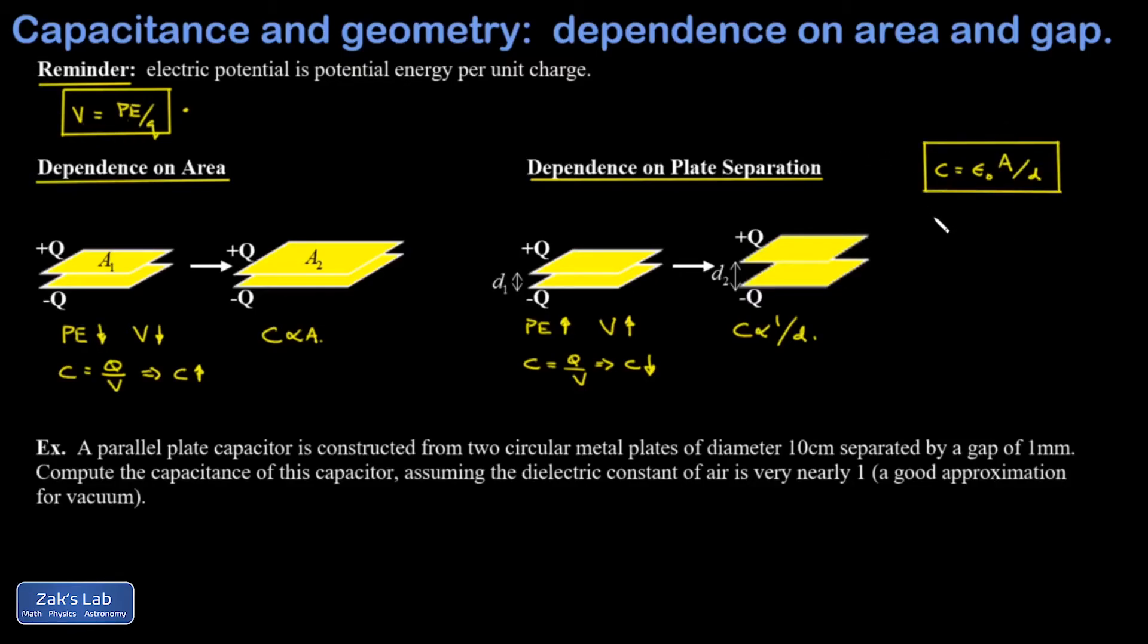And that constant is called epsilon zero, the permittivity of free space or the vacuum permittivity, and it has a value of 8.85 times 10 to the negative 12 farads per meter. Just briefly making sure the units make sense, area has units of meter squared, distance has units of meters, so I have a unit of meters here. Multiply by epsilon zero, the meters cancel and I get farads for the capacitance, so this is good.